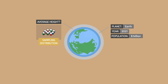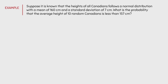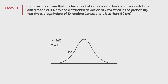So now that you know what a sampling distribution is, let's do some practice questions. Suppose it is known that the heights of all Canadians follows a normal distribution with a mean of 160 cm and a standard deviation of 7 cm. What is the probability that the average height of 10 random Canadians is less than 157 cm? Before I solve this question, I'm going to make some illustrations to help you understand what is happening. According to the question, we have a normal distribution with a mu of 160 and a sigma of 7. Mu is always located in the center of the distribution, so we will put 160 in the center. From here, we can create intervals that increase by the standard deviation. So one standard deviation to the right of the mean is 167, two standard deviations to the right is 174, and one standard deviation to the left is 153, and so on. This is the population distribution.